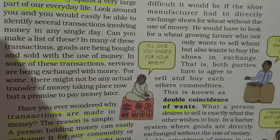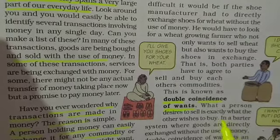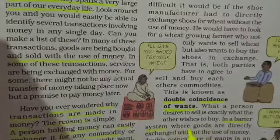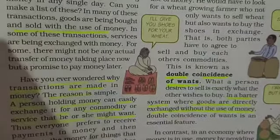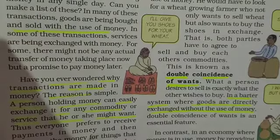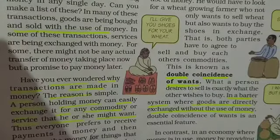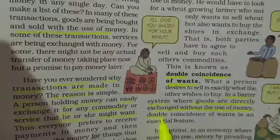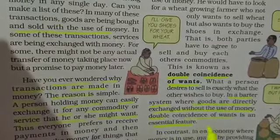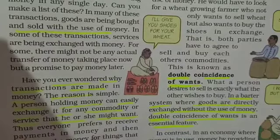Double coincidence of wants means both wants match — what one person desires to sell is exactly what the other wishes to buy. This is what we call the barter system of exchange. In the barter system, goods are directly exchanged without the use of money. Double coincidence of wants is an essential feature of the barter system of exchange.